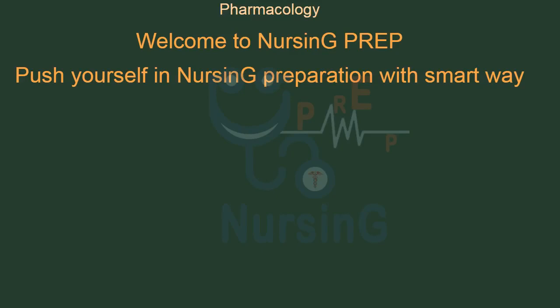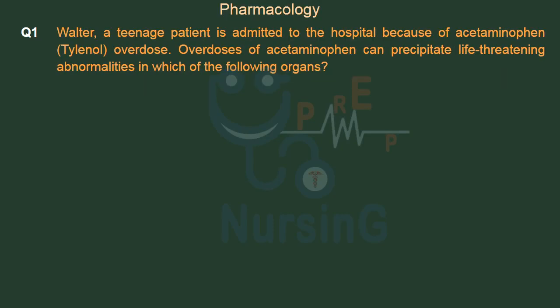Welcome to Nursing Prep Push Yourself in Nursing Preparation with Smart Way Pharmacology. A teenage patient is admitted to the hospital because of acetaminophen (Tylenol) overdose. Overdoses of acetaminophen can precipitate life-threatening abnormalities in which of the following organs?